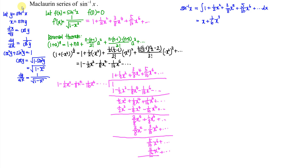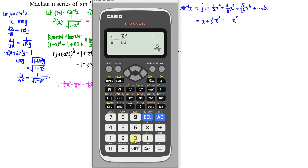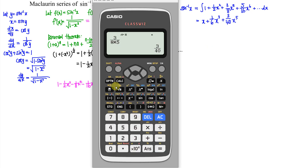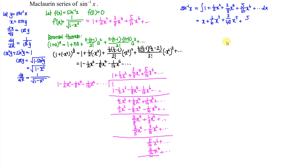Integrating term by term: integrating 1 gives x. Integrating 1 over 2 gives x to the power of 3 over 3, so 1 over 6 x cubed. For the next term, 3 over 8 times 1 over 5 gives 3 over 40 x to the power of 5. For the last term shown, 5 over 16 times 1 over 7 gives 5 over 112 x to the power of 7, and so on. And that's all for today — thanks for watching, hope you like this, see you!